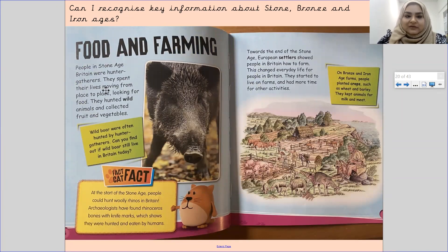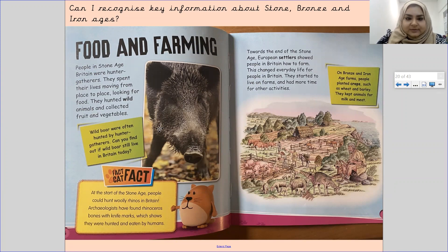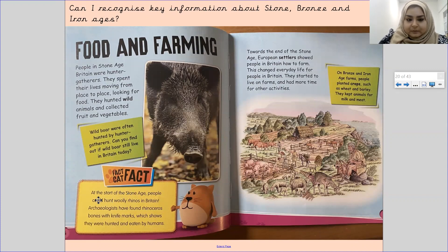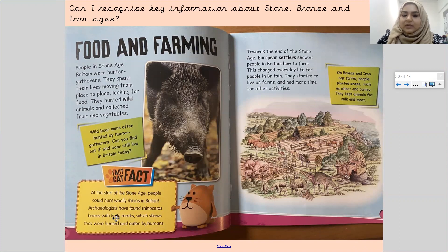People in Stone Age Britain were hunter-gatherers. They spent their lives moving from place to place looking for food. They hunted wild animals and collected fruit and vegetables. Wild boar were often hunted by hunter-gatherers. At the start of the Stone Age, people could hunt woolly rhinos in Britain. Archaeologists have found rhinosaurus bones with knife marks, which shows they were hunted and eaten by humans.